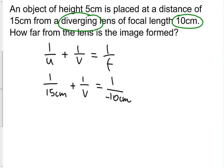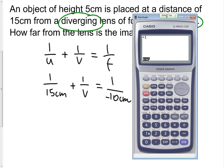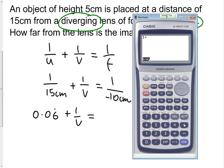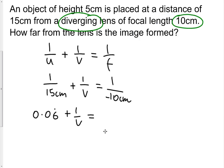Apologies for the long pause there, I was just loading up the calculator. Previously I solved this algebraically using fractions and manipulating them, but you don't have to do it that way. You can do it using your calculator - it's going to look messy, but just to show you there's more than one way to do it. You could convert all these into decimals using a calculator, so 1 over 15 is 0.06 recurring plus 1 over v is 1 over minus 10, which is minus 0.1.